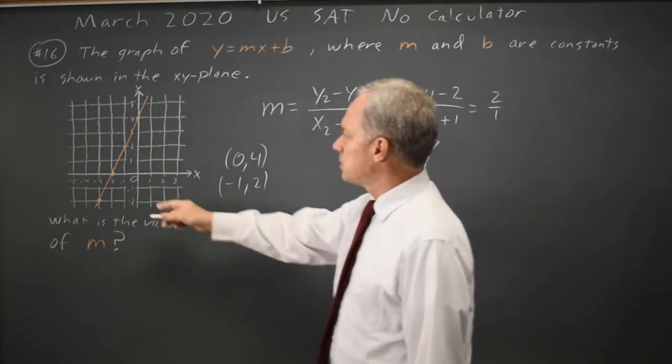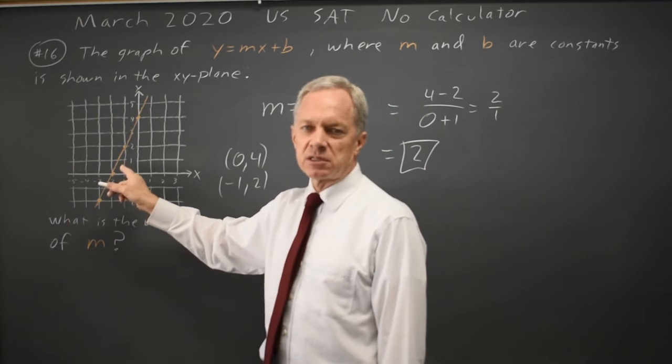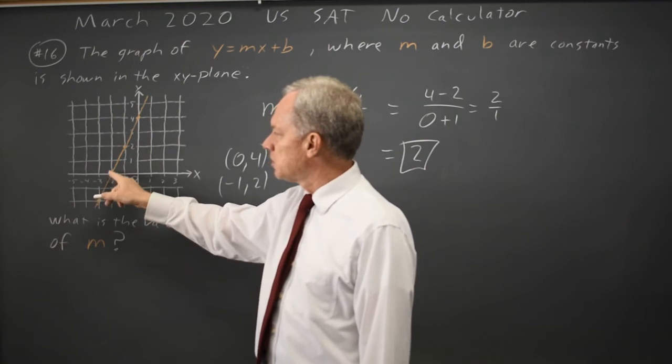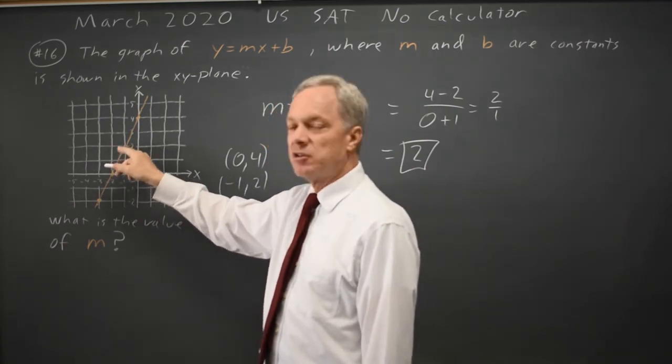And if we look, this is a positive slope because the values increase as we go to the right, and it's a slope of 2 because we go up by 2 each time we go over by 1...